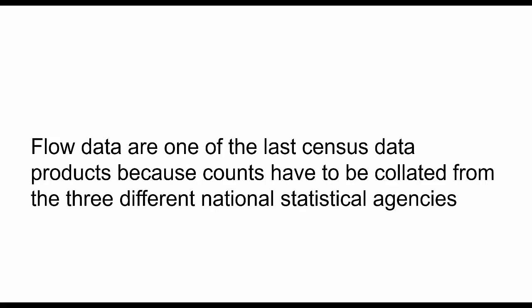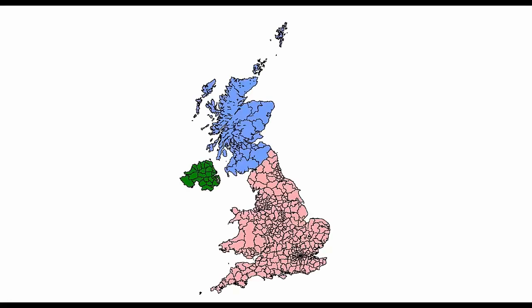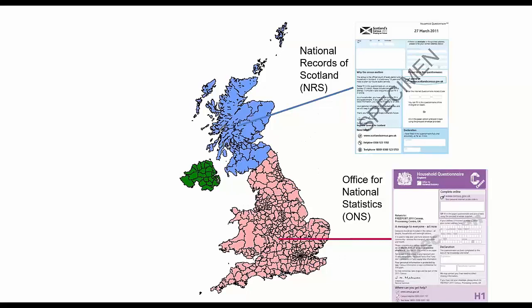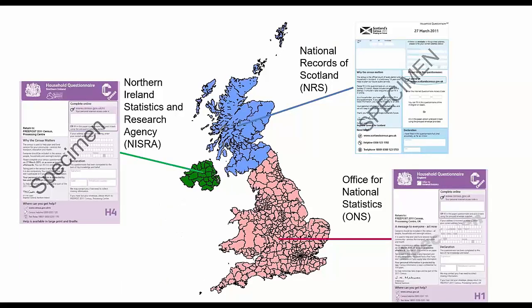Flow data are one of the last census data products because counts have to be collated from three different national statistical agencies. For England and Wales there is the Office for National Statistics (ONS); for Scotland, the National Records of Scotland; and for Northern Ireland, the Northern Ireland Statistics and Research Agency (NISRA).